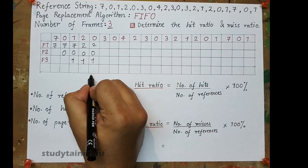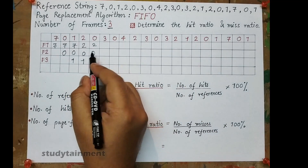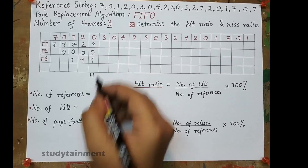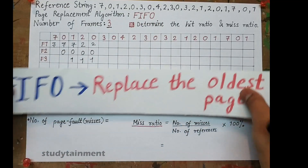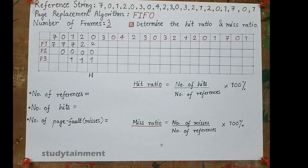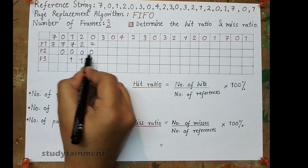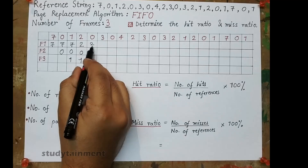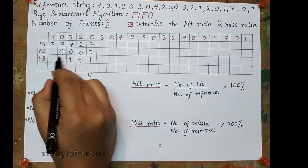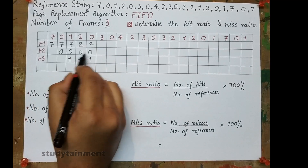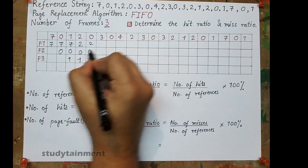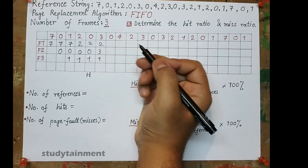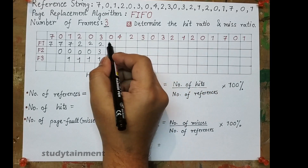Now 3 arrives and is not present, so we have to replace. Based on FIFO, we replace the oldest page. Here, 0 occurred 4 times continuously, 1 for 3 times, and 2 for 2 times — so 0 is the oldest page and will be replaced with 3.